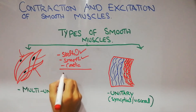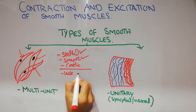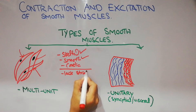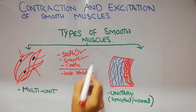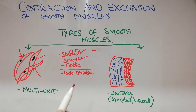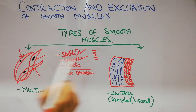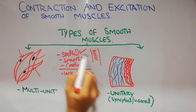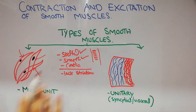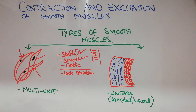Smooth muscles are known as smooth muscles because they lack striation. In skeletal muscles, there are dark and light bands, which is why they appear striated. That striation was due to the specific pattern of the actin and myosin filaments — the thick and thin filaments. That specific appearance is lacking in smooth muscles; they appear smooth, which is why they are known as smooth muscles.